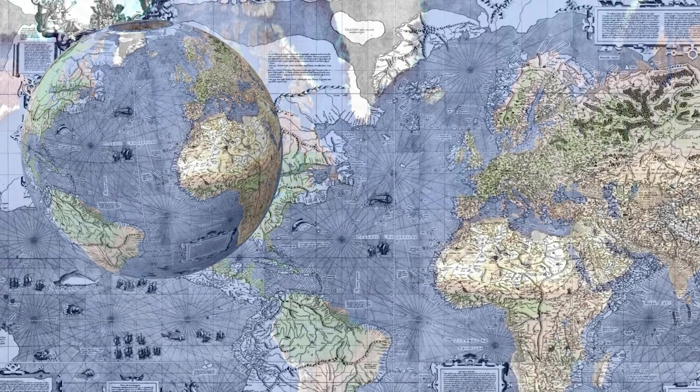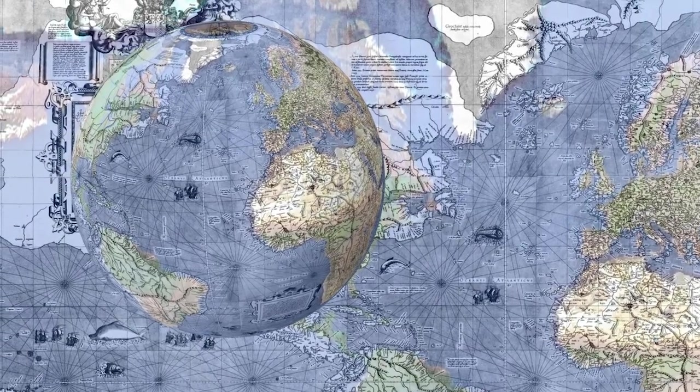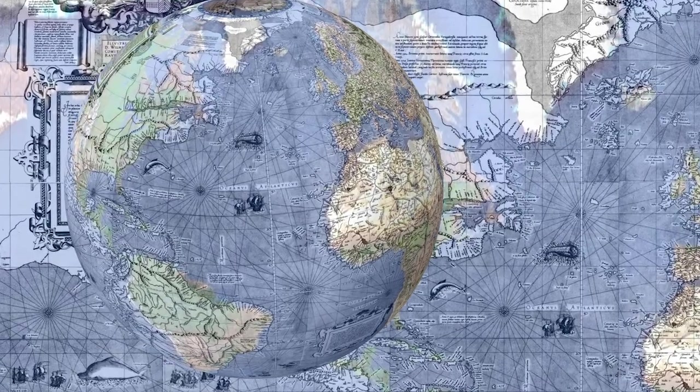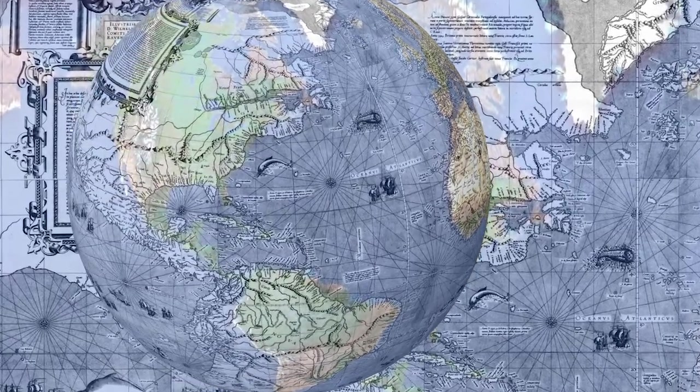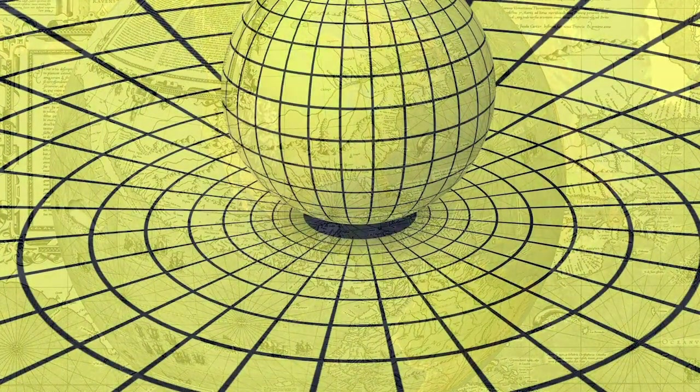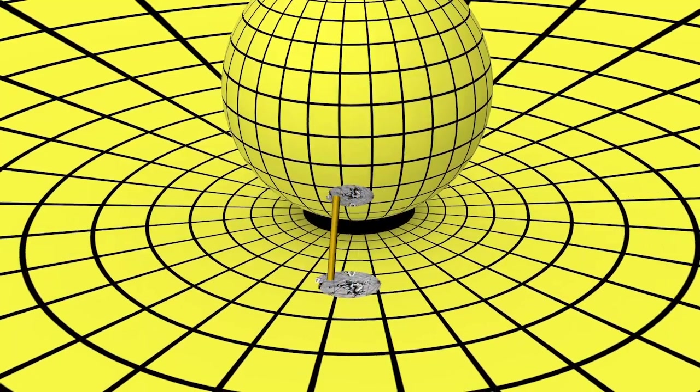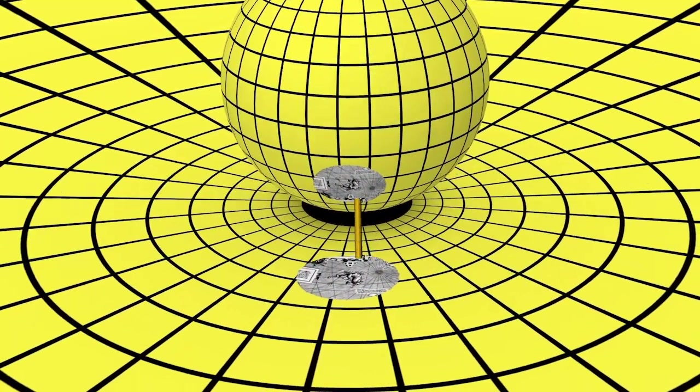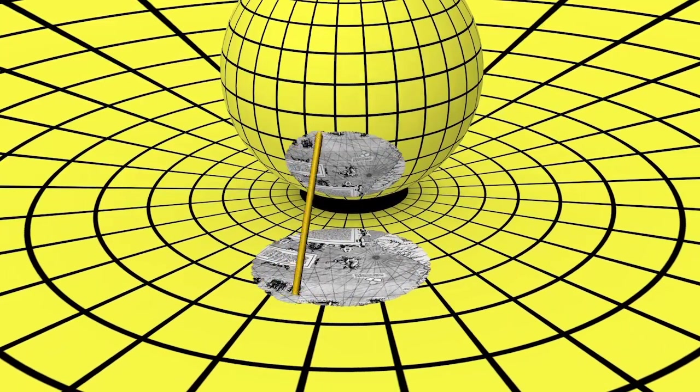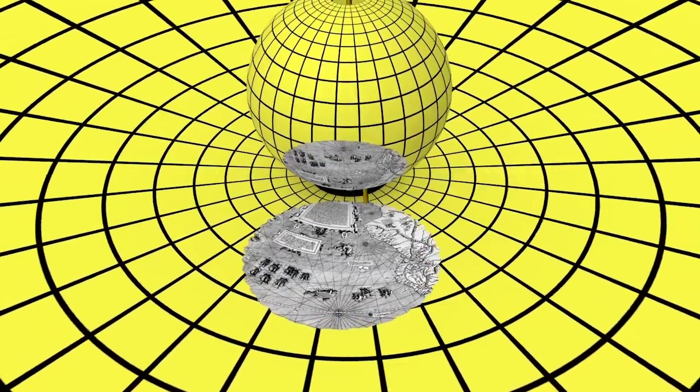Let's return now to Mercator's map. Although no one knows exactly how Mercator produced his map, mathematicians later showed it can be explained using two conformal steps. First, the sphere is flattened out onto the plane using stereographic projection. Here, a magic brush performs the projection from the sphere onto the plane.